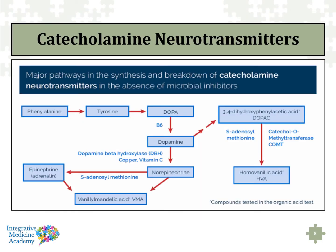On organic acid testing — specifically from Great Plains Lab — page two contains a catecholamine neurotransmitter chart. This is mostly used to determine the functional status for the production of dopamine as well as norepinephrine, primarily through the evaluation of dopamine beta-hydroxylase, which converts dopamine to norepinephrine. Amino acids are important precursors to dopamine: phenylalanine and tyrosine. Phenylalanine hydroxylase converts phenylalanine to tyrosine, and tyrosine hydroxylase converts tyrosine to dopa.